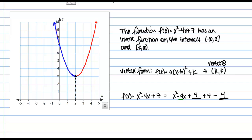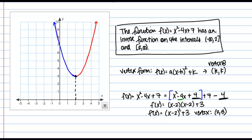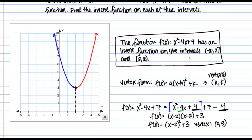If done correctly, the first three terms form a perfect square: x² − 4x + 4 = (x − 2)(x − 2). So the expression becomes (x − 2)² + 3, and I can read off that the vertex is at (2, 3). This confirms what we said before. The intervals on which the function has an inverse are from negative infinity to 2 and from 2 to infinity.